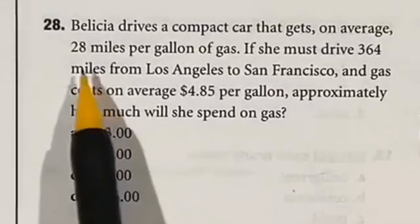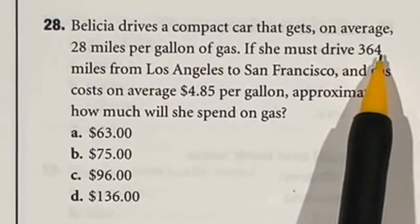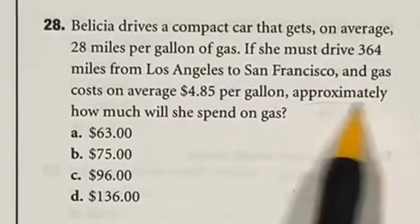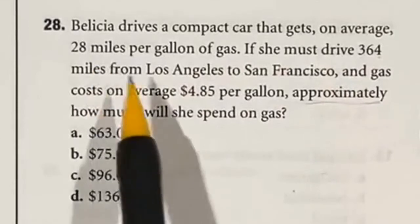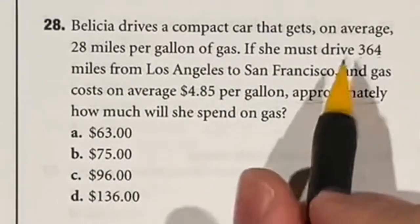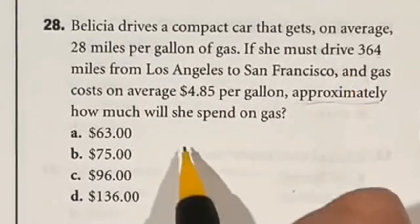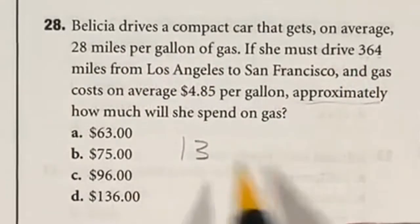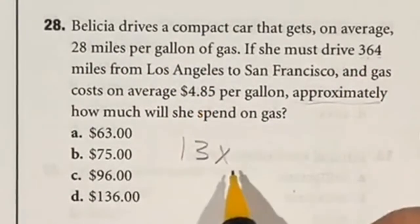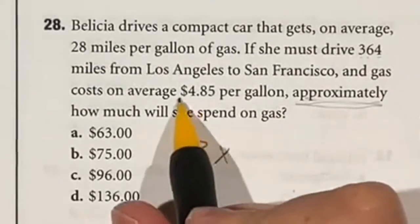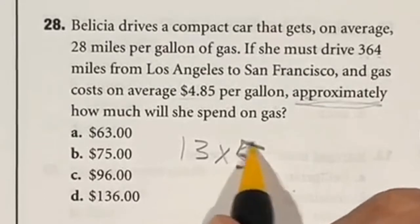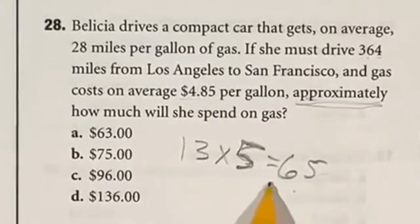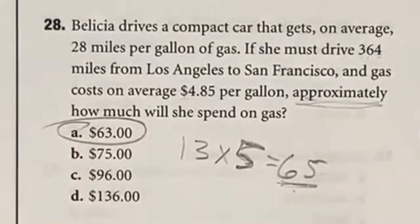The car gets 28 miles per gallon and has to drive 364 miles. They give the price of gas per gallon and want to know the approximate cost. First: 364 divided by 28 equals 13 gallons. Then multiply 13 by $4.85. Since it says approximately, I'll round up to $5. 13 times 5 is 65. Since $4.85 is less than $5, the answer must be just under 65, so the only option less than 65 is 63.